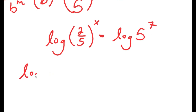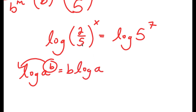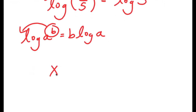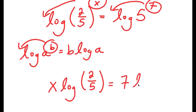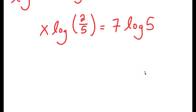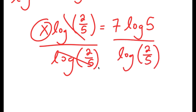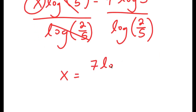Now from here, I'm going to take the log on both sides. So I get log of (2/5) to the power of x is equal to log of 5 to the power of 7. If I have something in the form log a to the power of b, I can move the exponent b to the front to get b times log a. So I get x times log(2/5) is equal to 7 times log 5.